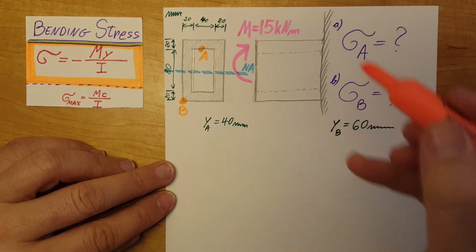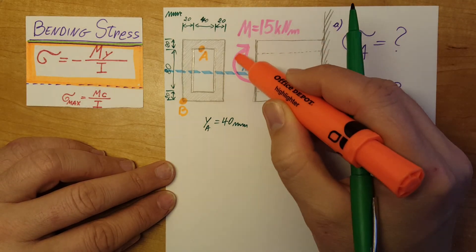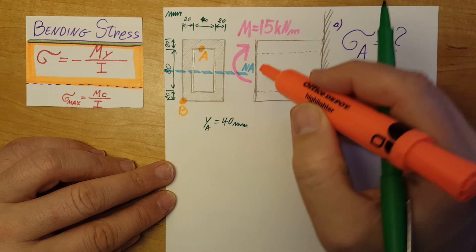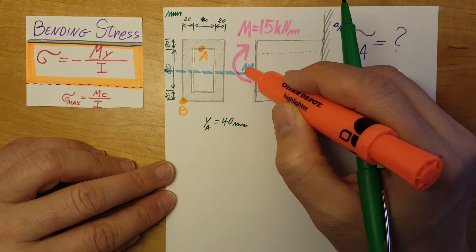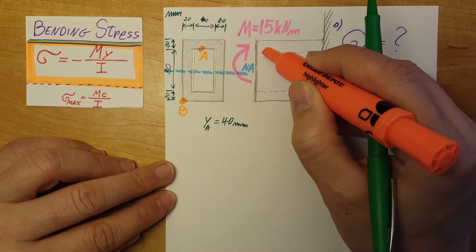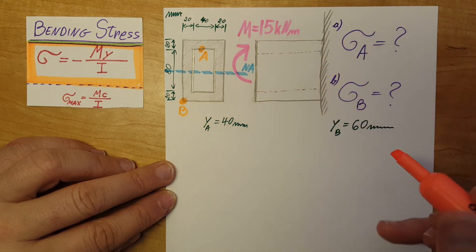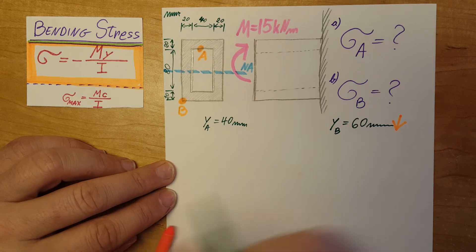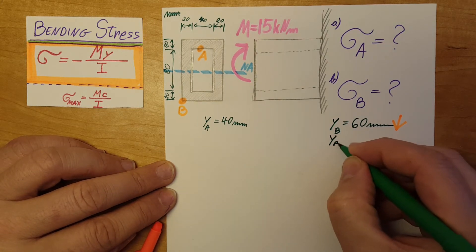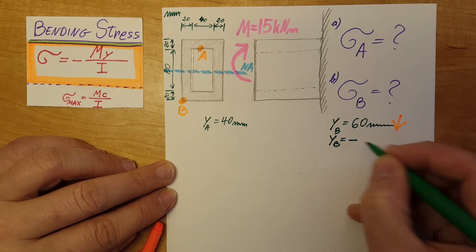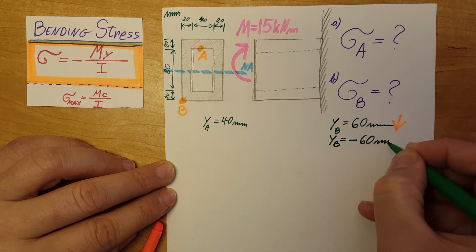And since we can see that the moment is acting upward, therefore all the measurements above the neutral axis upward will be positive and everything downward will be negative. And this is downward. Therefore, my Y is actually negative 60 millimeters.